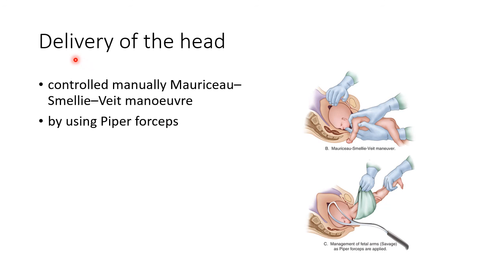For delivery of the head in breech presentation, the head can be delivered manually or by using Piper's forceps. If delivered manually, it is known as the Mauriceau-Smellie-Veit manoeuvre. This picture shows the Mauriceau-Smellie-Veit manoeuvre for manual head delivery, and another picture shows the use of Piper's forceps for head delivery in breech.